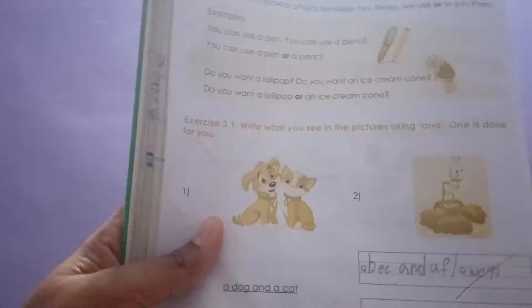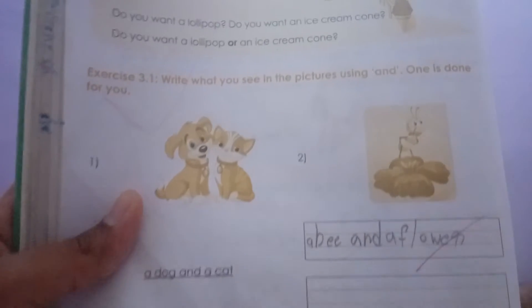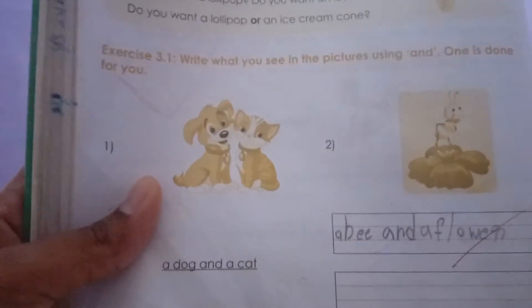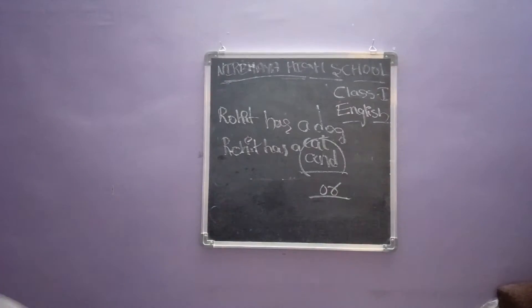See, children, here is Exercise 3.1. Write what you see in the picture using 'and'. What are we seeing in the picture? Here is a puppy and a cat — by using 'and' we are writing the pictures. See the second one: there is a flower and a bee. So write: a bee and a flower — F-L-O-W-E-R, flower.